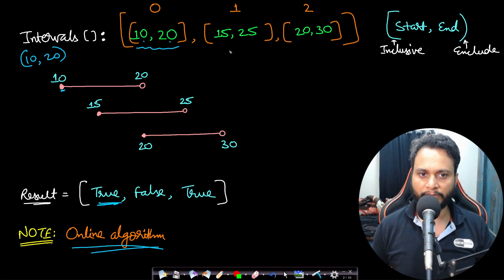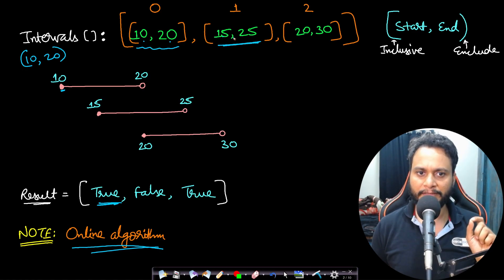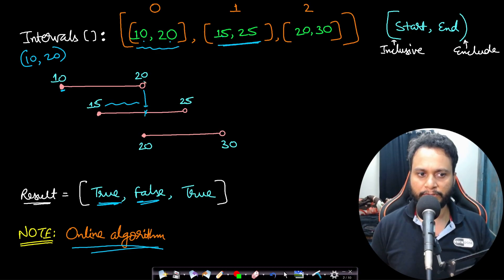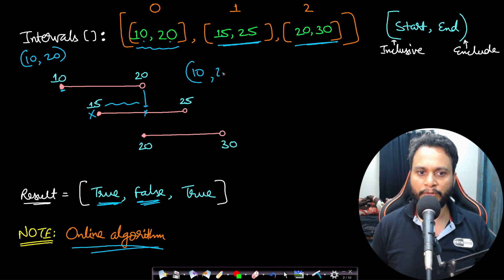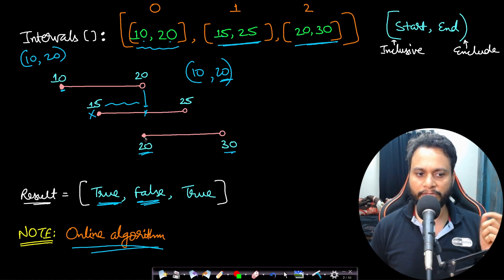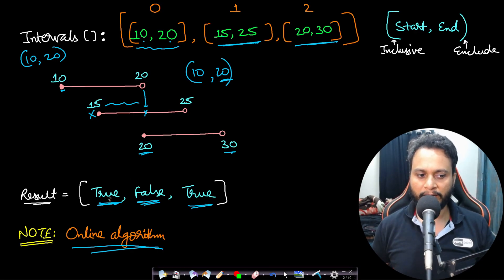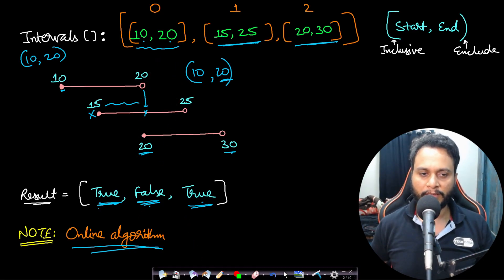After [10,20] is booked, the next booking request is [15,25]. From 15 to less than 20 there is an overlap, so we return false. Now the third request is [20,30]. Since 20 was not included in the first booking, the range [20,30) is completely outside our booked range, so we return true. Our answers are: true, false, true — returned after every call to booking.